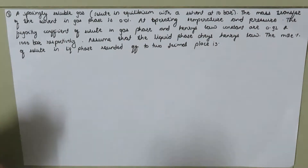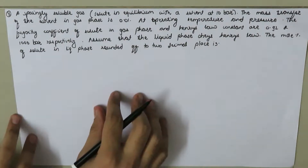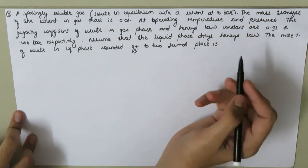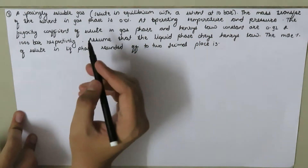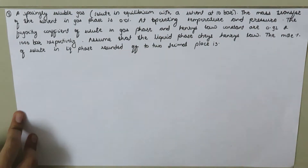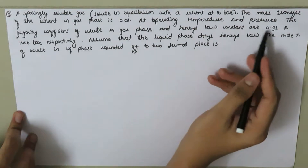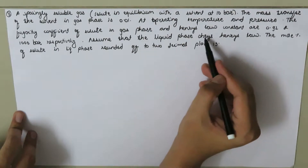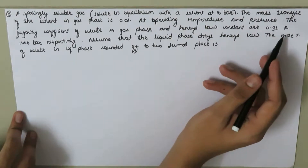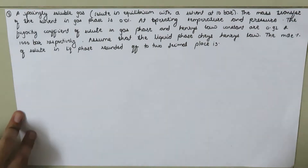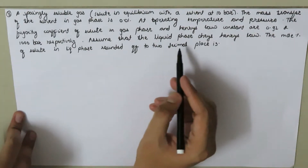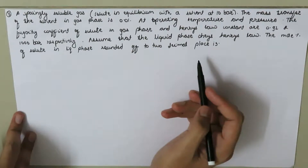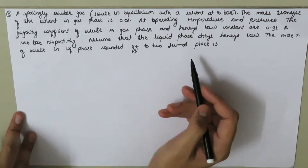Here we have our next example. A sparingly soluble gas — a solute in equilibrium with a solvent at 20 bar. The mole fraction of the solvent in the gas phase is 0.01 at the operating temperature and pressure. The fugacity coefficient of the solute in the gas phase and the Henry's law constant are 0.92 and 1000 bar respectively. Assume that the liquid phase obeys Henry's law and find the mole percent of the solute in the liquid phase, rounded to two decimal places.